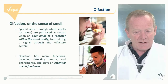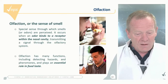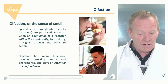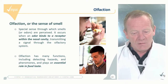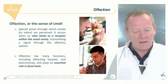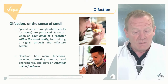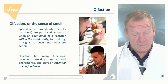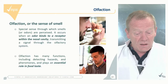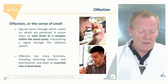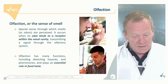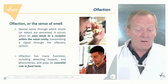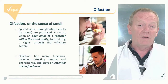Olfaction is a special sense through which smells or odors are perceived by the body. It occurs when an odor molecule binds to a receptor within the nasal cavity, transmitting a signal through the olfactory nervous system. Olfaction has many functions, including originally the detection of hazards and pheromones, and we now know it plays a very important role in food taste.